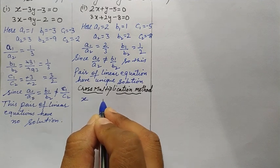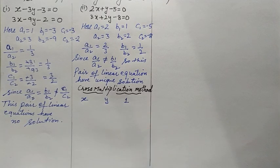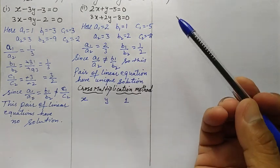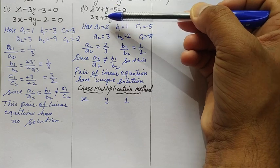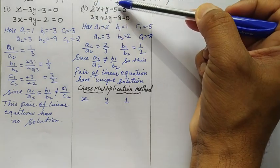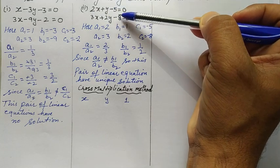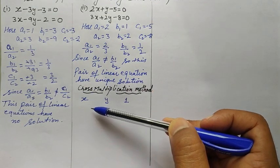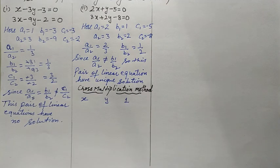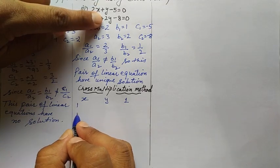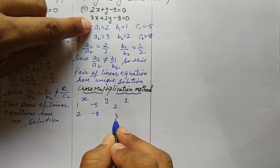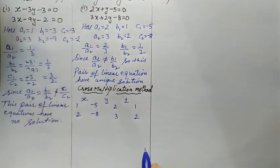In the cross multiplication method, we write x, y, and 1 at the top. Then we write the coefficients in order: starting from coefficients of y — 1, 2 — then constant terms −5, −8 — then coefficients of x — 2, 3 — then coefficients of y again — 1, 2. So below x we have 1 and 2; below y we have −5 and −8; then 2 and 3; then 1 and 2.